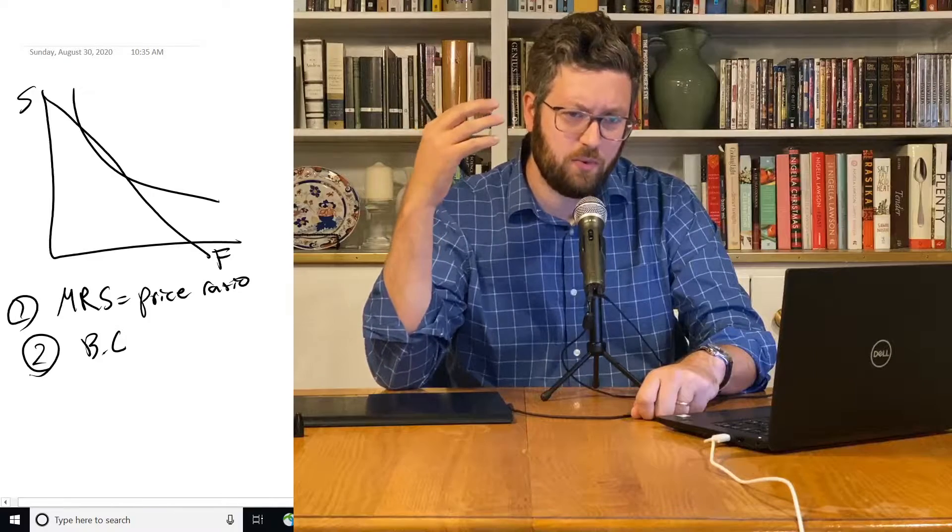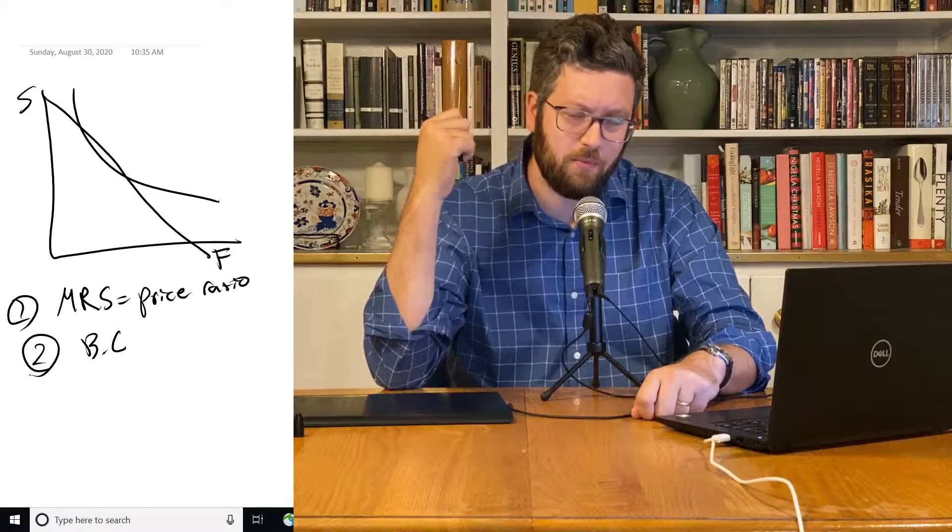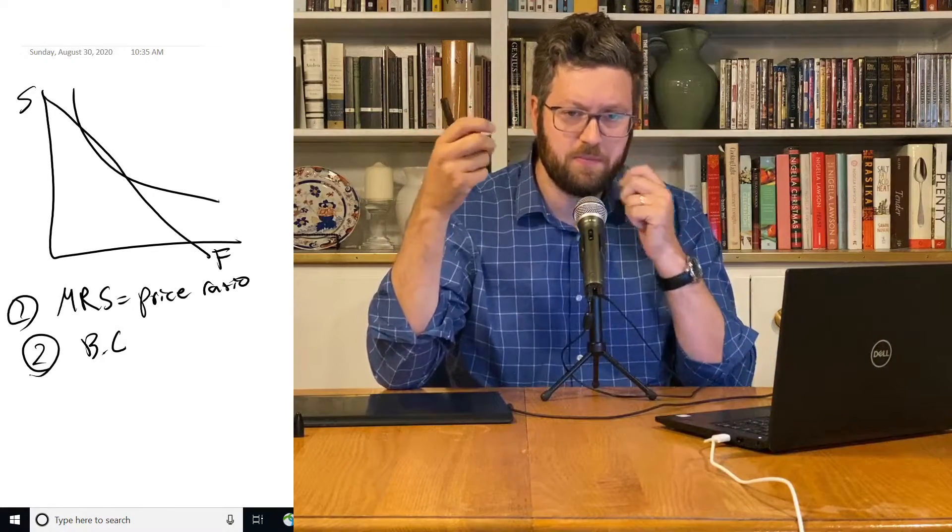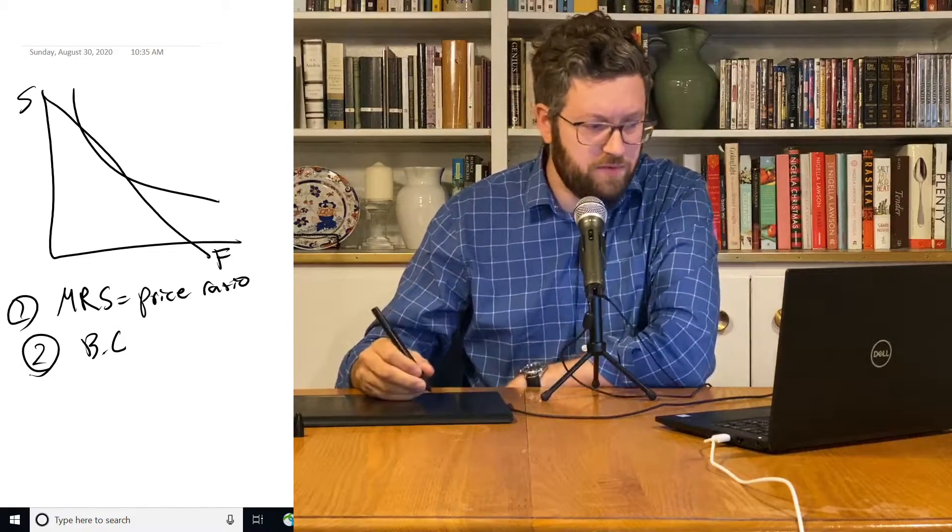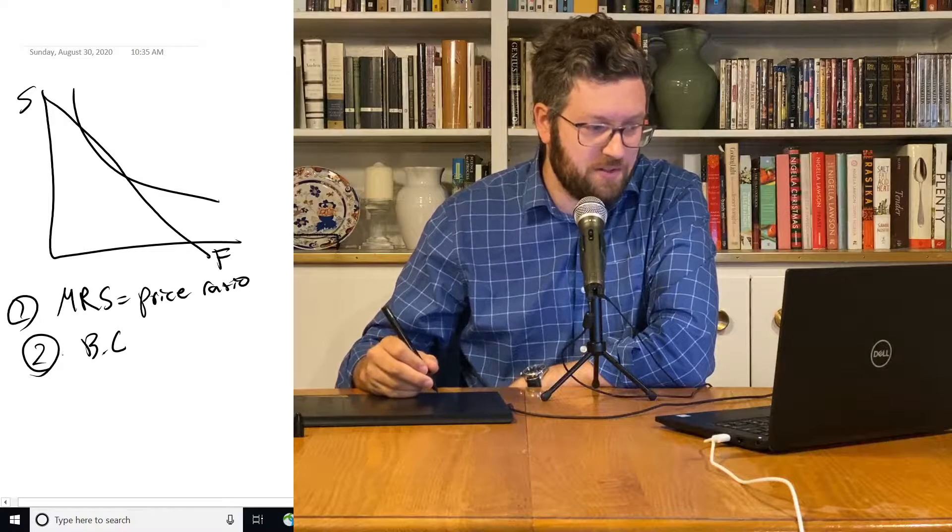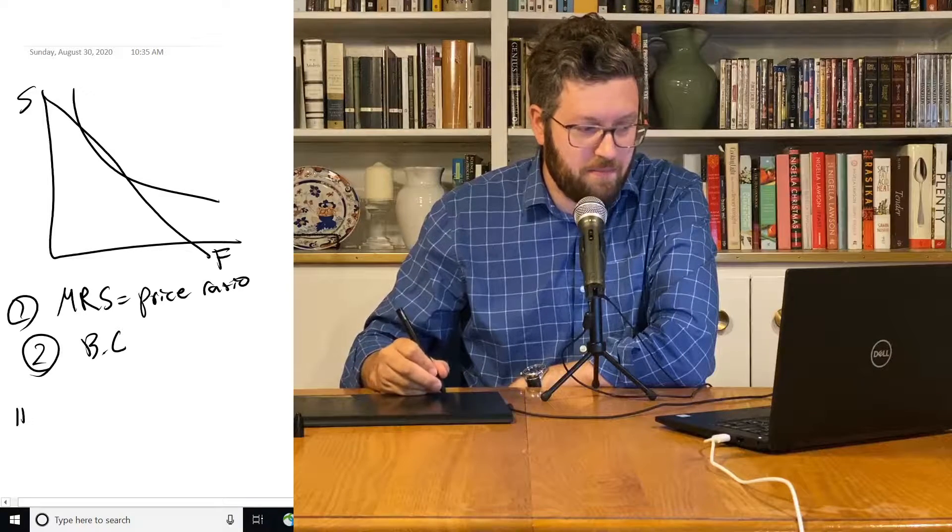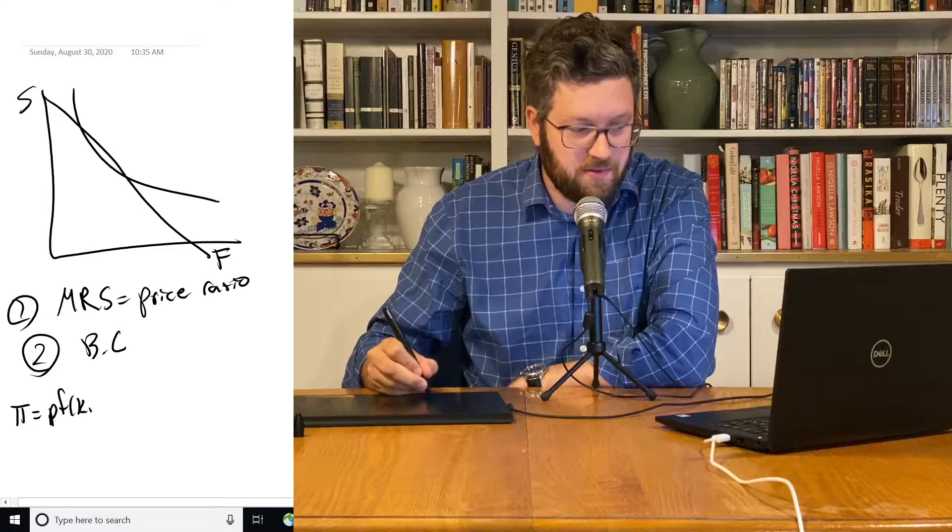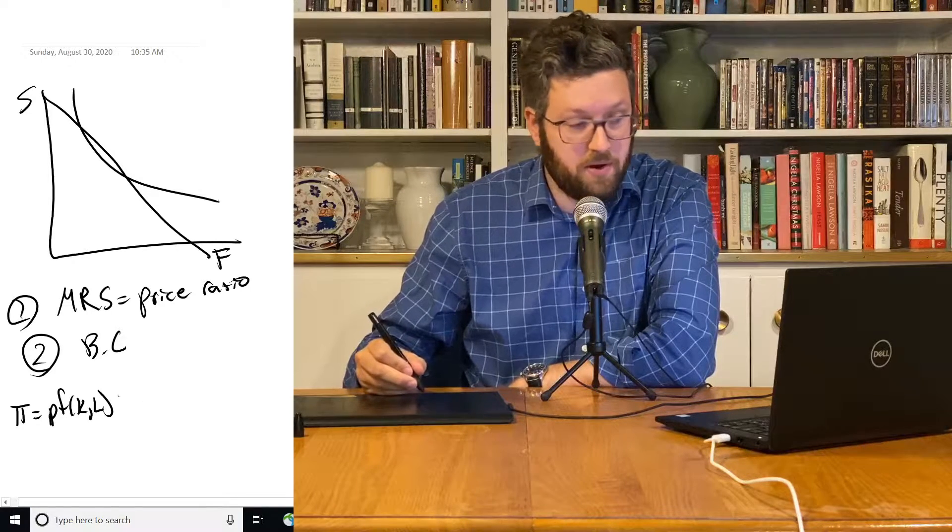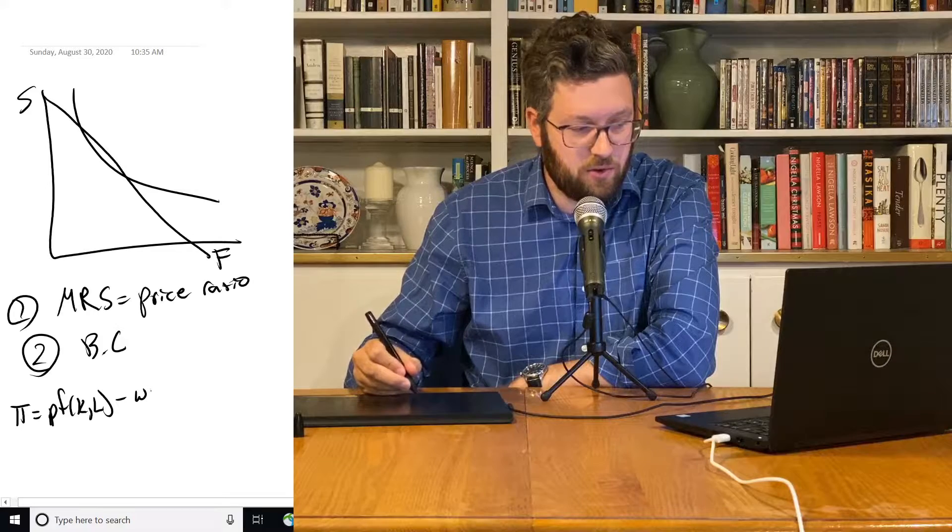Now, in contrast, when we were solving the problem for firms, we did sort of a similar thing. But we very quickly moved to this representation of the profit maximization problem. Price times the production function is the output minus their total costs.